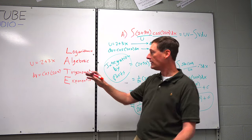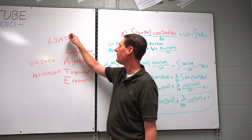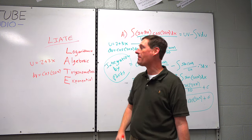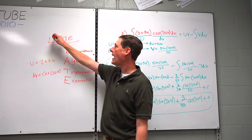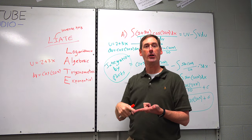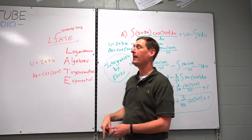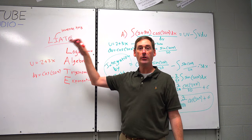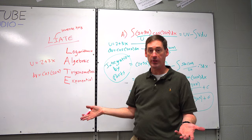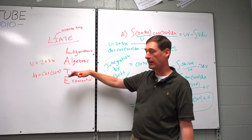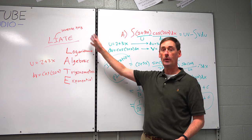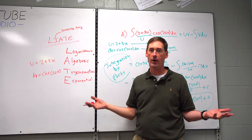In the last problem, 2 plus 3x was algebraic and cosine was trigonometric. The one that's higher is your u, and the one that's lower is your dv — this rarely ever deviates in high school BC calculus or even Calc 2. In college you'll also see LIOT, where I stands for inverse trigonometry like arc sine and arc cosine, but there are no AP test problems with inverse trig times something else. In high school, you just need LATE.